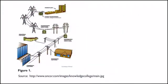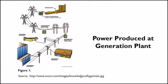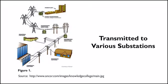As shown in Figure 1, power is produced at a generation plant and transmitted over transmission lines to various substations. Substations are an integral part of electric generation, transmission, and distribution systems.